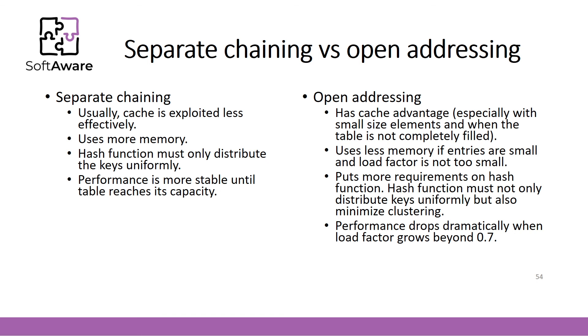The separate chaining and open addressing have their own advantages and drawbacks. The main properties of separate chaining are as follows. In separate chaining usually cache is exploited less effectively. It uses more memory. It has fewer requirements for hash function. Hash function must only distribute the keys uniformly. Performance is more stable until the table reaches its capacity.